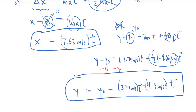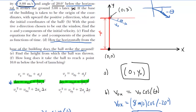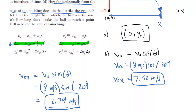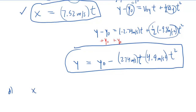We can now move on to part D: how far horizontally from the base of the building does the ball strike the ground? The ball flies from its launch point down to the ground, giving us some final x-coordinate. The ball strikes the ground three seconds later — we are given the time value. Using the equation from part C: x equals 7.52 meters per second multiplied by 3 seconds. When we calculate this, we get a final x-coordinate of about 22.6 meters.